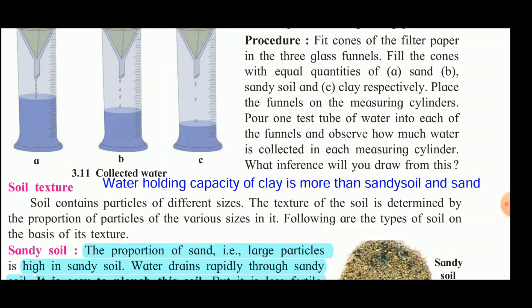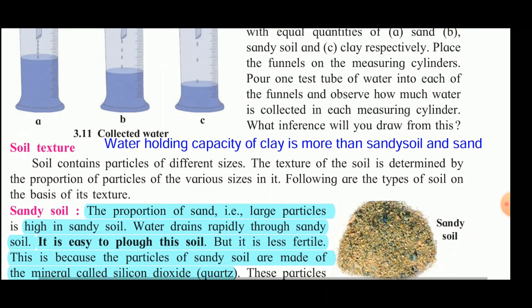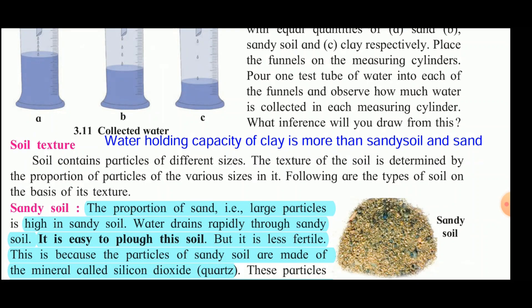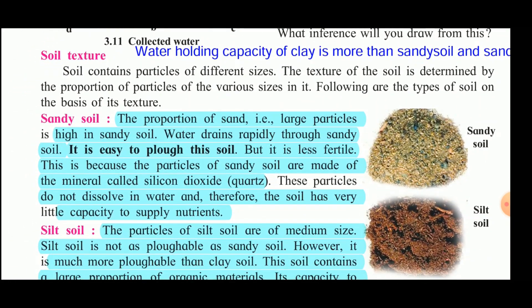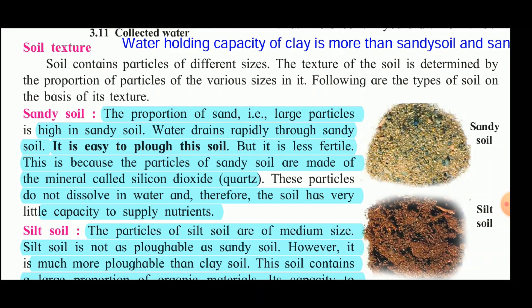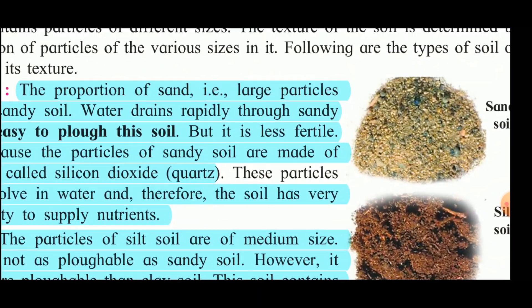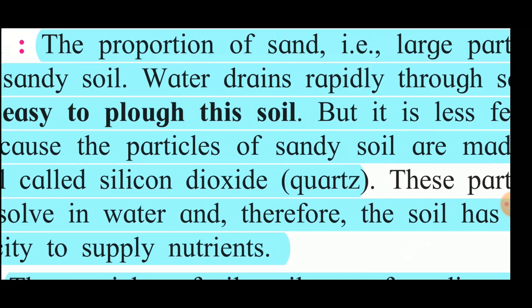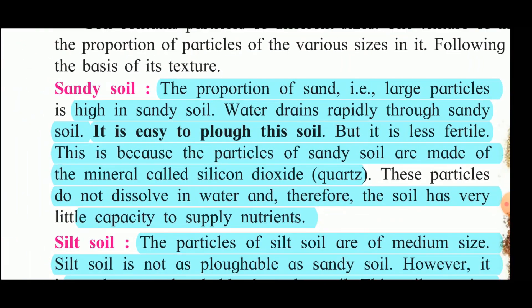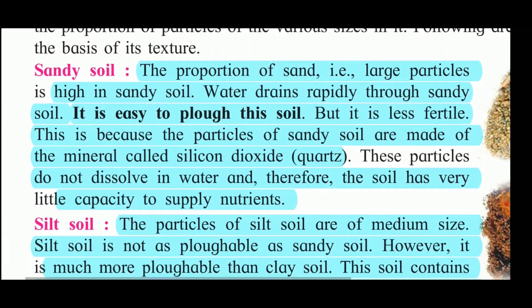Soil contains particles of different sizes. The texture of the soil is determined by the proportion of particles of various sizes in it. The three types of soil based on texture are: sandy soil, silt soil, and clay soil. In sandy soil, the proportion of large particles is high, and water drains rapidly through it.